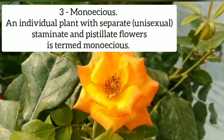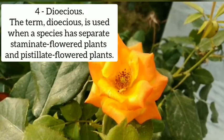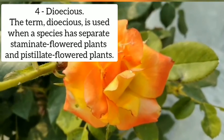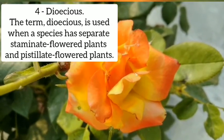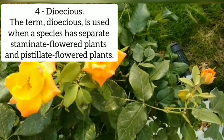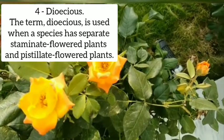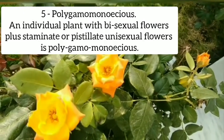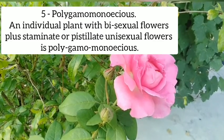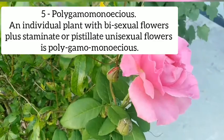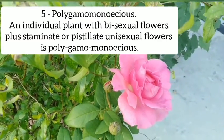Third, monoecious: an individual plant with separate unisexual staminate and pistillate flowers is termed monoecious. Fourth, dioecious: the term dioecious is used when a species has separate staminate-flowered plants and pistillate-flowered plants.